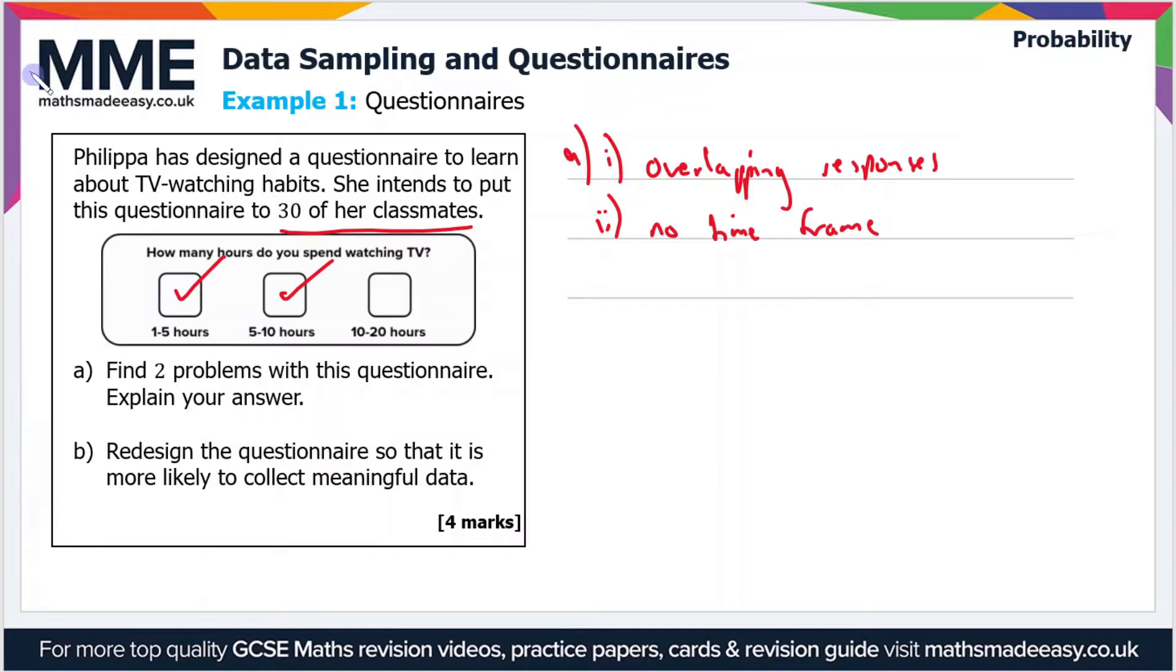So if we move on to part b, then we need to redesign the questionnaire so that it's more likely to collect meaningful data. So if we rewrite the question: how many hours do you spend watching TV? But if we remember, we need to add a time frame, so let's say per week. And then as we said before, we need to make sure the question is clear, so let's say including streaming services. So that's like Netflix, iPlayer, all the rest of it.